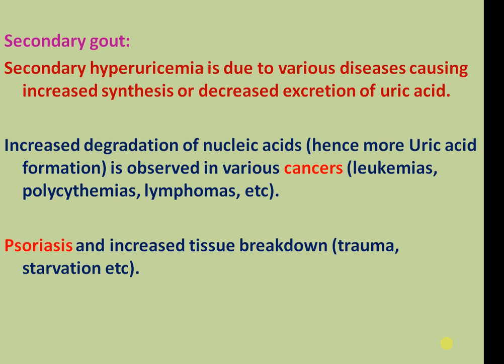Secondary gout: hyperuricemia is due to various diseases causing increased synthesis or decreased excretion of uric acid. Increased degradation of nucleotides, hence more uric acid formation, is observed in various cancers like leukemia, polycythemia, lymphomas, psoriasis, and also with increased tissue breakdown in trauma and starvation.